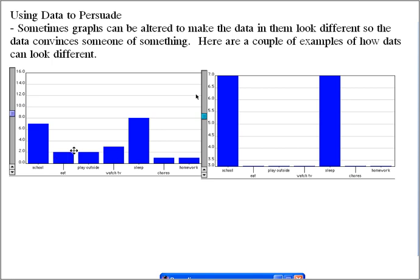But if you were a kid and you wanted to convince your parents all you do is go to school and sleep, so you should be allowed to stay up later and you should be allowed to play outside and play more and watch more TV, you might actually show this graph. Because if you look here, it says that it starts off at three. It doesn't actually start off at zero.